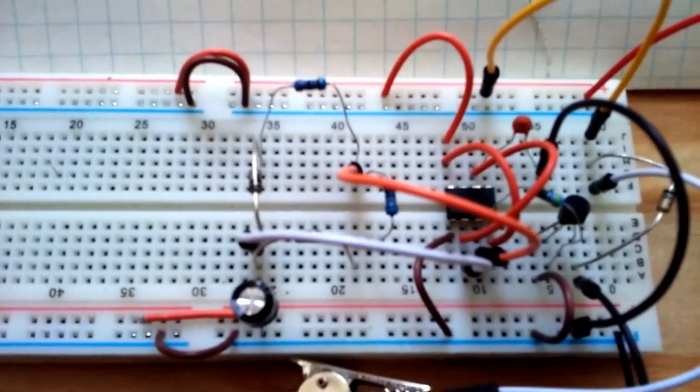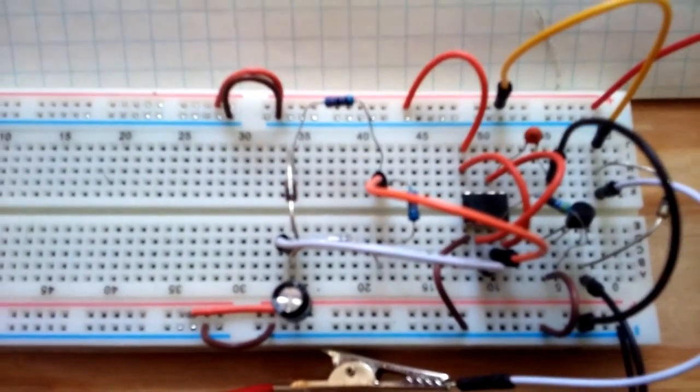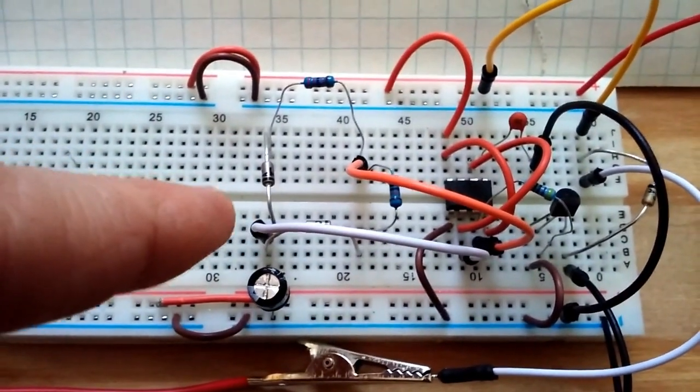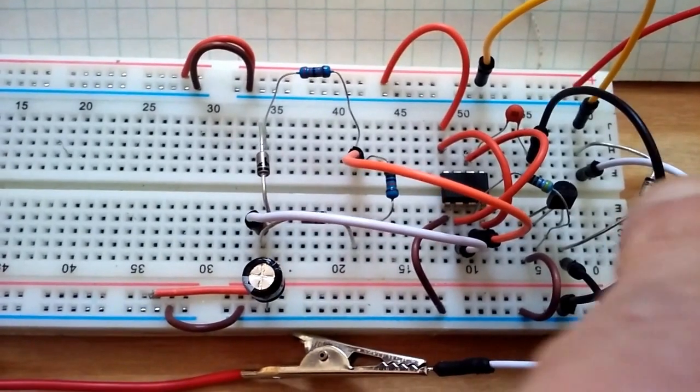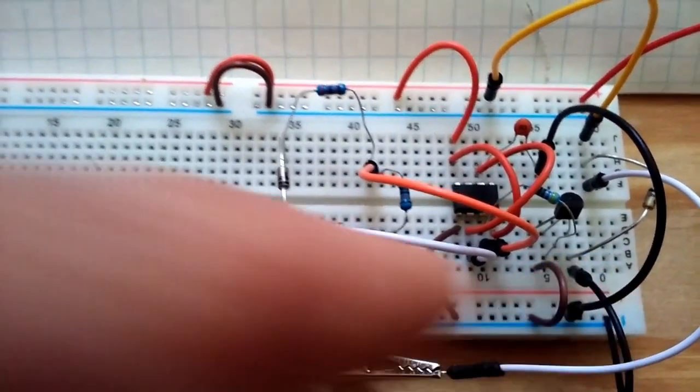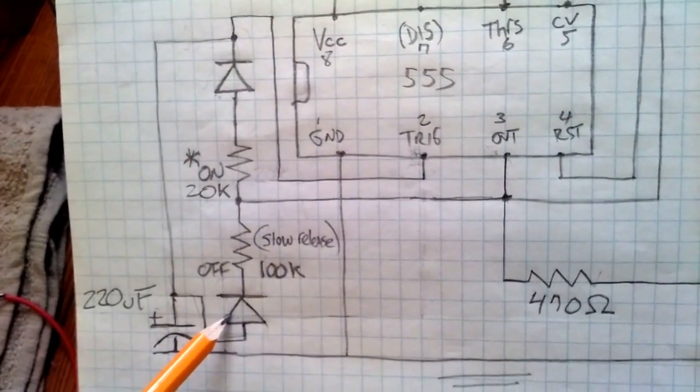Take a look at the breadboard. There's our 555 chip, and you'll see that we've got some diodes here as well, and an NPN transistor coming from pin 3 on the output. Now you'll notice that